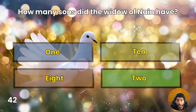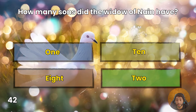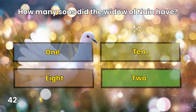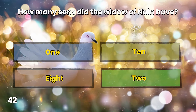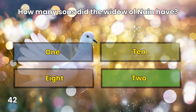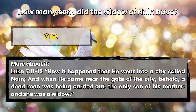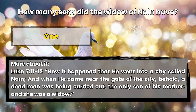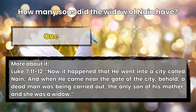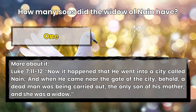Question 42: How many sons did the widow of Nain have? One. Luke 7:11-12 — Now it happened that he went into a city called Nain, and when he came near the gate of the city, behold, a dead man was being carried out, the only son of his mother, and she was a widow.